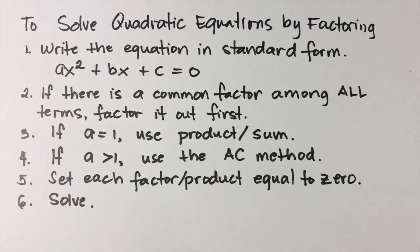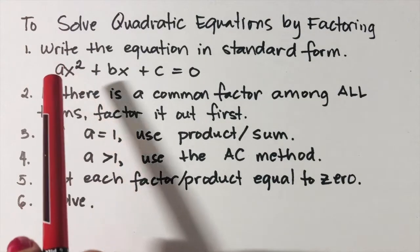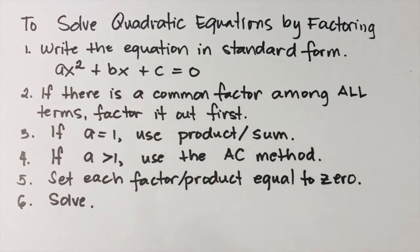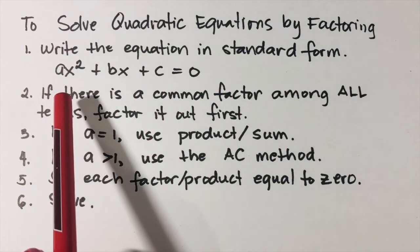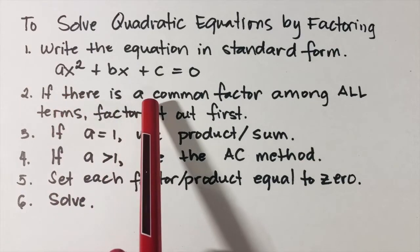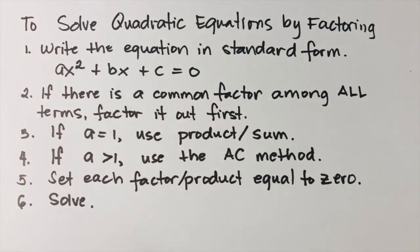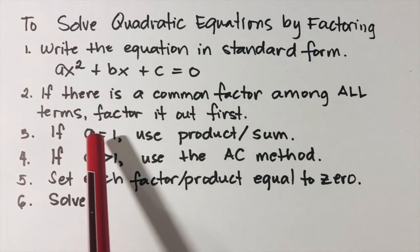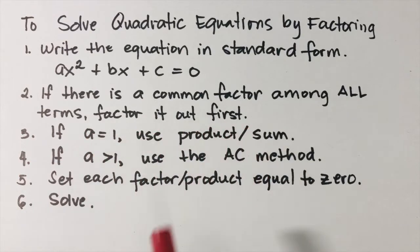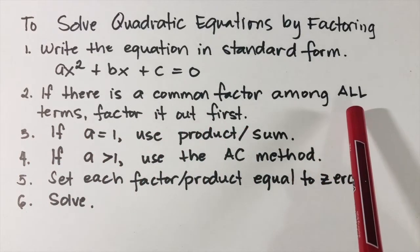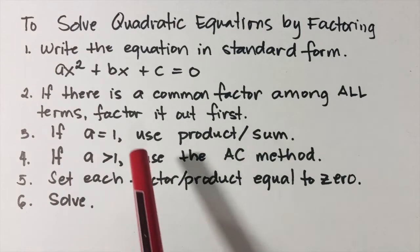This video shows how to solve quadratic equations by factoring. To solve quadratic equations by factoring, we need to consider the following: number one, always write the equation in standard form, that is ax squared plus bx plus c equals zero. Number two, if there is a common factor or greatest common factor among all terms, factor it out first.